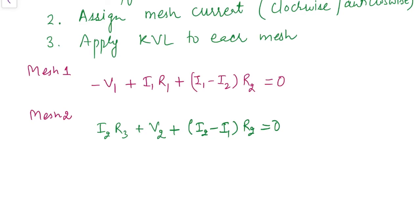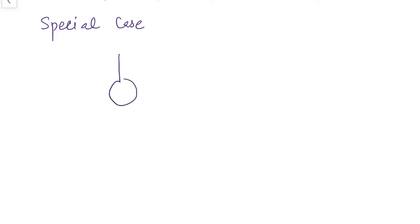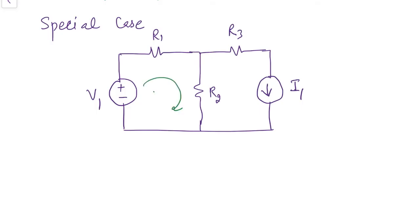Before moving to numerical problems, let's consider a special case in mesh analysis. We have the same circuit with one change: instead of a voltage source, we now have a current source with value I1. We still identify two meshes and assign mesh currents — I'll call them Ix and Iy to differentiate them from the source current I1.